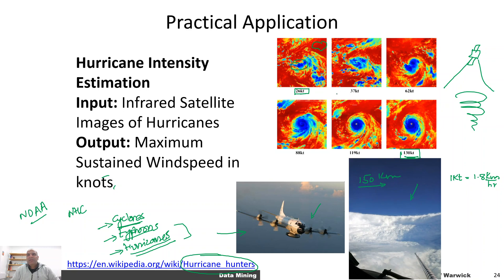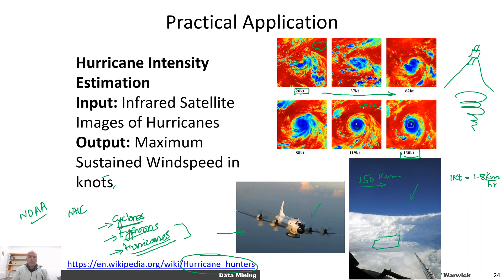As a hurricane increases in intensity and wind speed, different types of cloud structures are formed. This includes the famous eye of the storm, an area through which, if you are directly above, you can see the sea surface below. There can be a very large temperature gradient: the tops of the clouds can reach around minus 100 degrees Celsius, while the sea surface is typically around 30 degrees Celsius.